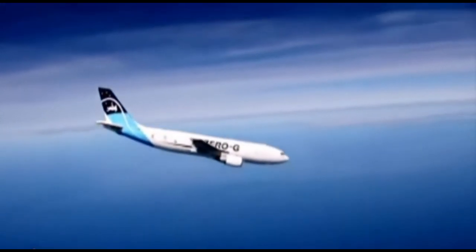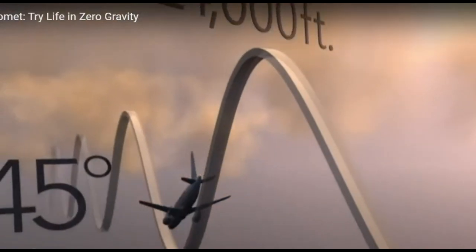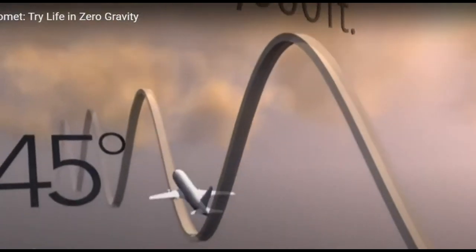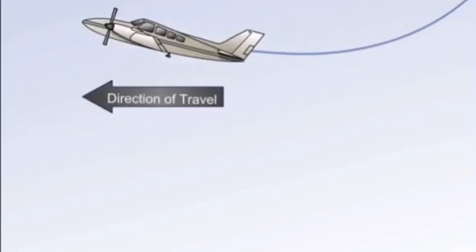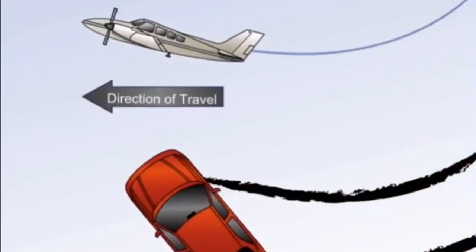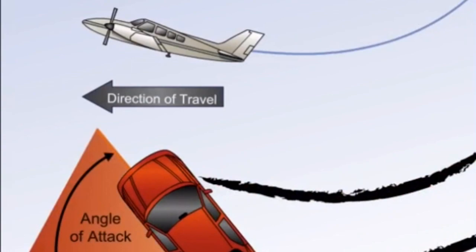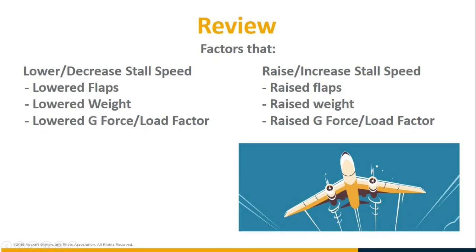When the airplane is weightless it can slow all the way to zero without stalling. But at the bottom of those curves, it would stall at a significantly higher speed than normal, because to pull out of the dive and start climbing again the airplane must generate far more lift than in level flight, requiring a higher angle of attack closer to the critical angle of attack. To review: lowering flaps, lowering weight, or lowering load factor will lower your stalling speed; raising flaps, raising weight, or raising load factor will raise your stalling speed.